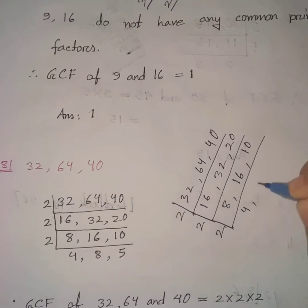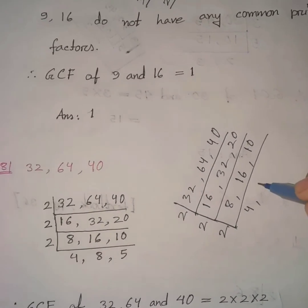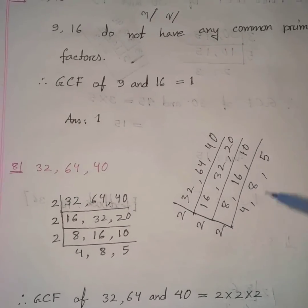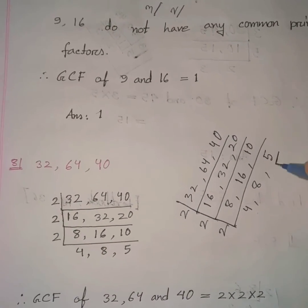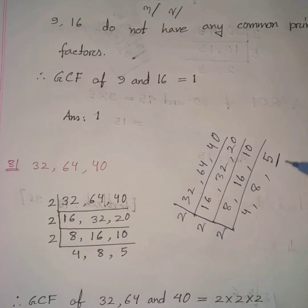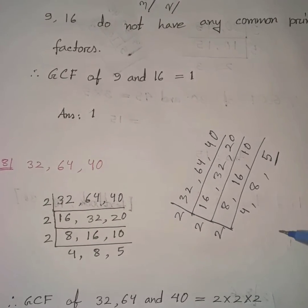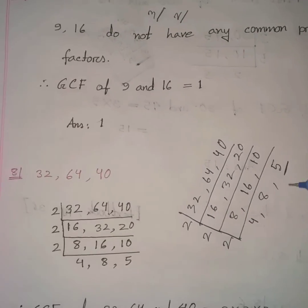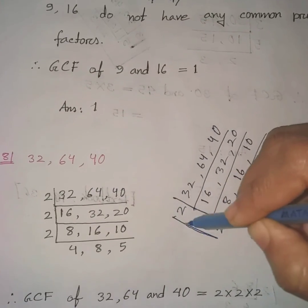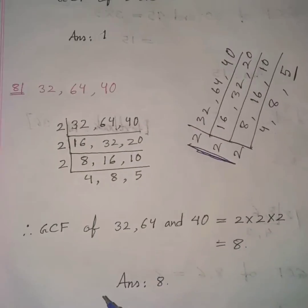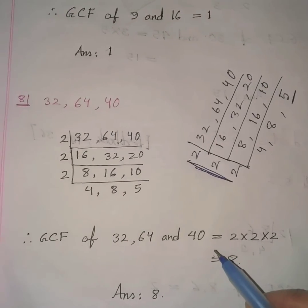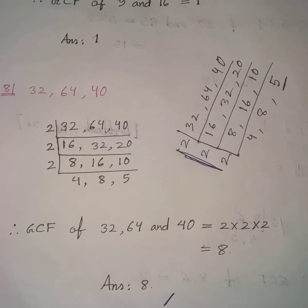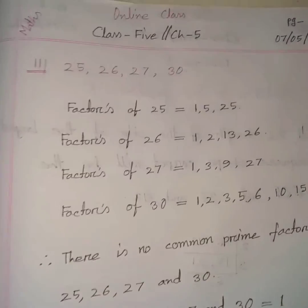Dividing: 8÷2=4, 16÷2=8, 10÷2=5. Now 4 and 8 are even but 5 is a prime number, so there is no common prime factor for all three. We stop the division when no common factor for all numbers is found. GCF = 2 × 2 × 2 = 8. Hence the answer is 8.